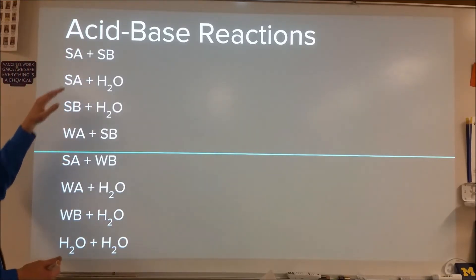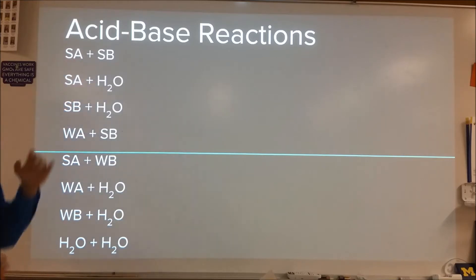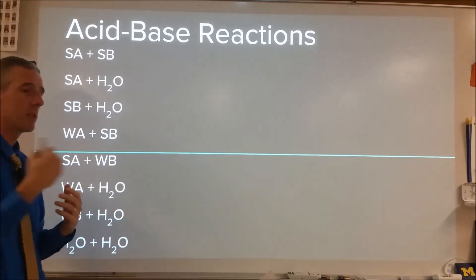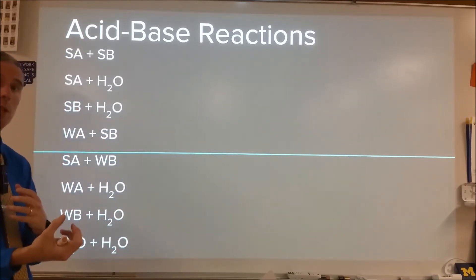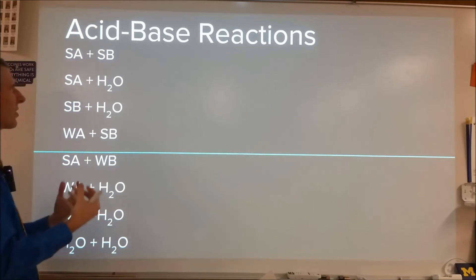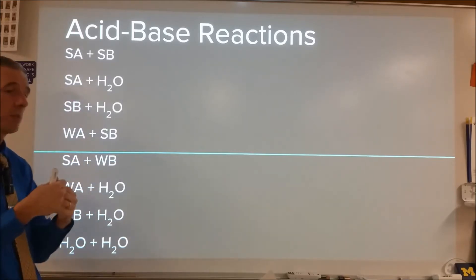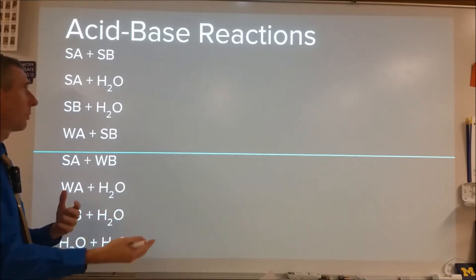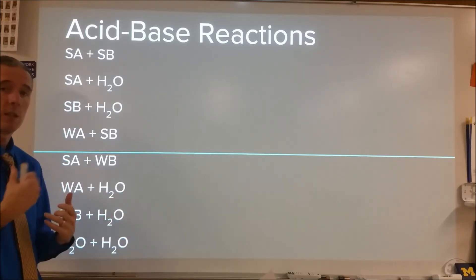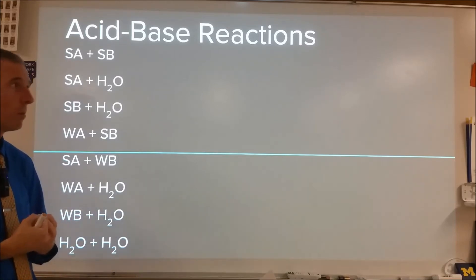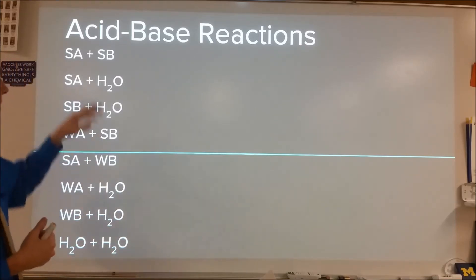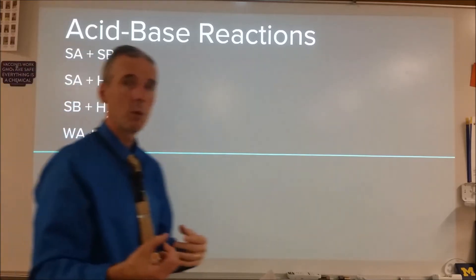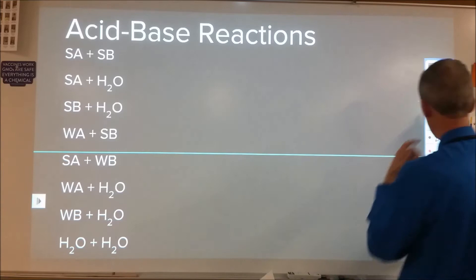The rule of thumb is: anytime you have a strong acid or a strong base — a strong acid is something that gives away a proton, giving away an H+; a strong base is something that takes an H+. Strong implies it's good at that particular job. A strong acid is good at getting rid of an H+, and anything that can take that H+ probably will. A strong base will take an H+ if one is available. So anytime you have a strong acid or strong base, regardless of what it's reacting with, you can assume that reaction will go to completion and analyze using stoichiometry.